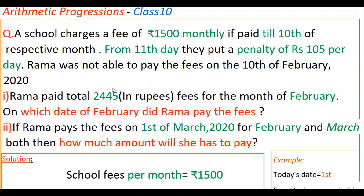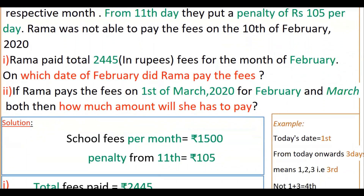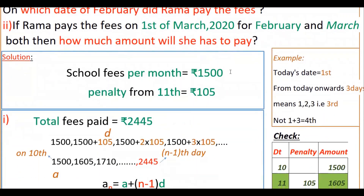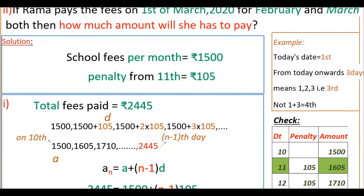Since 2445 is greater than 1500 rupees, that means she paid after the 10th and paid some penalty as well. That is why it is greater than 1500 rupees. For the first question, the school fees per month is 1500 rupees, and the penalty from the 11th is 105 rupees each day.